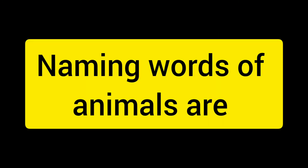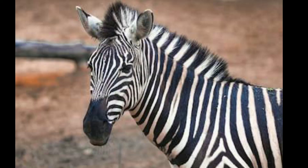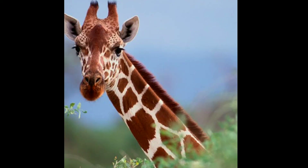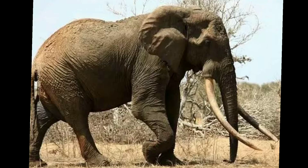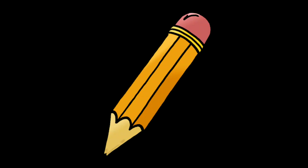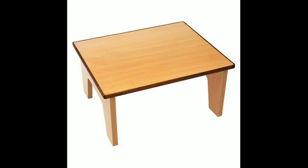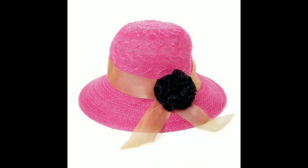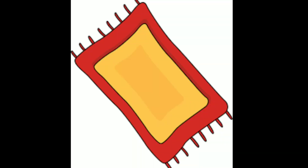So children, today we have learnt naming words of things and naming words of animals. Let's revise once again. Naming words of animals are: Tiger, Zebra, Giraffe, Cow, Elephant — and one animal you will tell me in the comment box. Now the naming words of things: Pencil, Chair, Table, Bag, Hat — and the last one you will tell me. Okay?